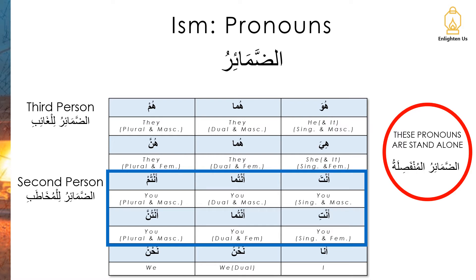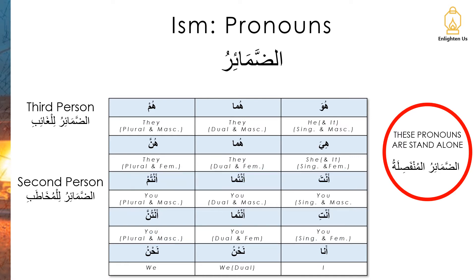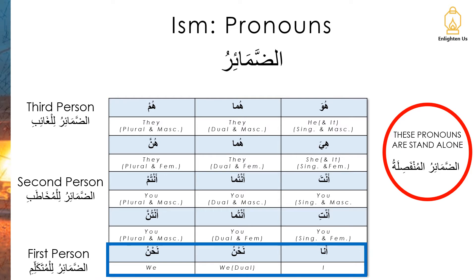The third and fourth rows are الضمائر للمخاطب, for the second person. مخاطب means being addressed, so these are the pronouns for the one being addressed. And lastly, the last row — الضمائر للمتكلم. These are for the first person, and المتكلم means the one speaking, so these are the pronouns for the one speaking.